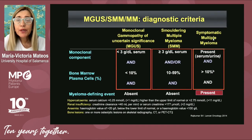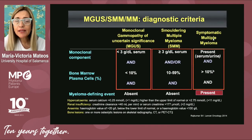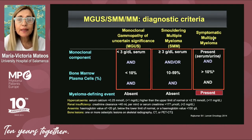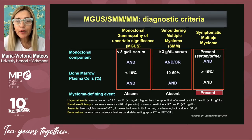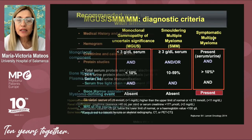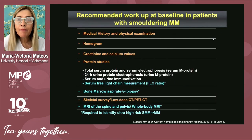What happens with smoldering myeloma? Smoldering myeloma lies between MGUS and multiple myeloma. The M component is higher than three grams and the plasma cell bone marrow infiltration is higher than 10% but lower than 60%. Myeloma defining events are not present, and patients are completely asymptomatic.